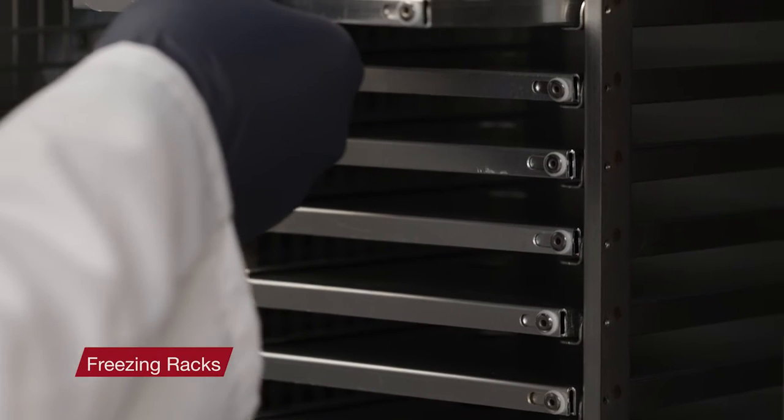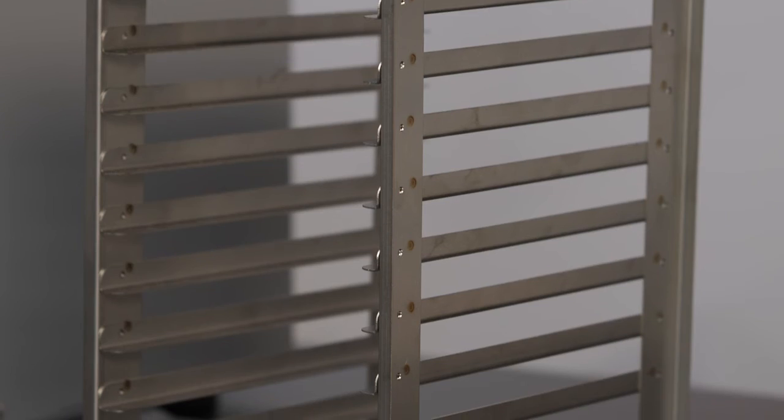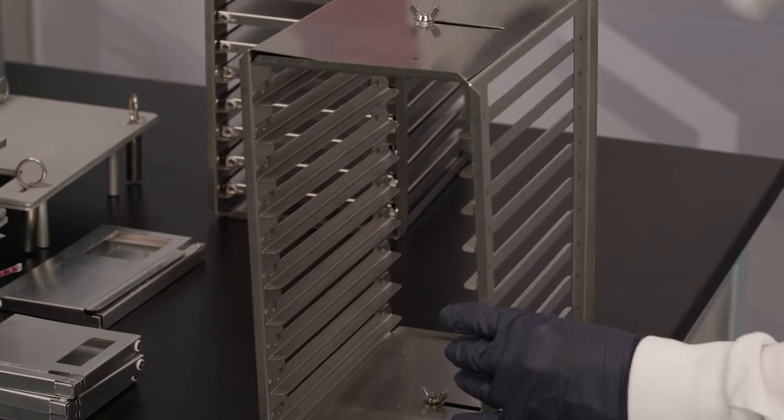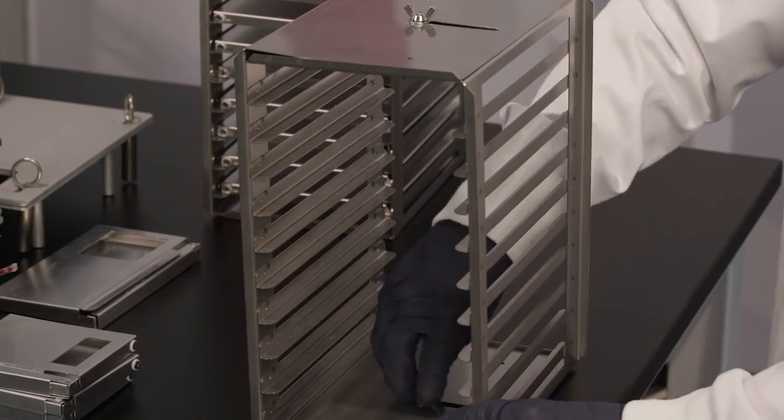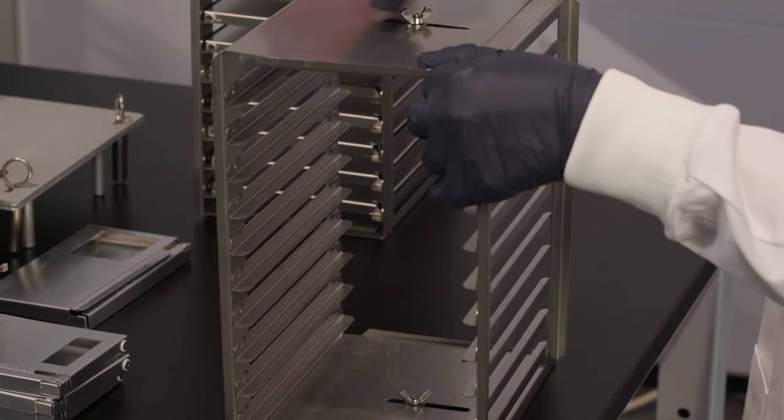If you are looking for freezing racks for the Cryomed controlled rate freezer, choose from racks to support your 25 to 50 ml bag, or our popular adjustable rack that allows for use with various sizes of canisters, from 100 to 750 ml.